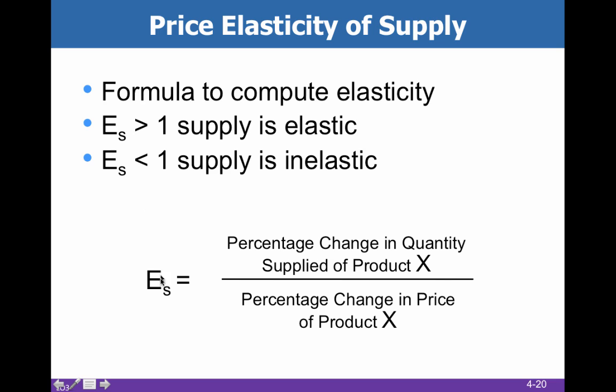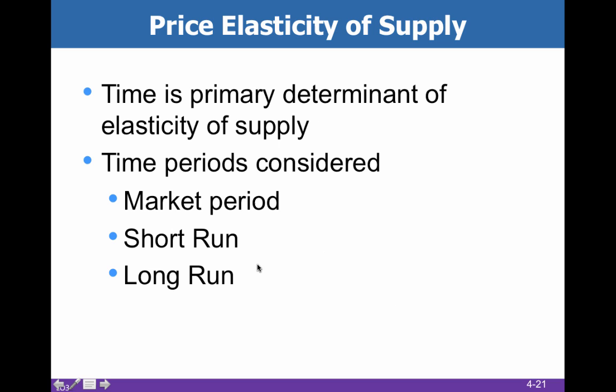Our formula is pretty much exactly the same as what we learned with elasticity of demand — it is stuff over money. The percentage change in price of the product is on the denominator, and percentage change in quantity of the product is in the numerator. Everywhere that we saw a D, we put an S; everywhere that we saw quantity demanded, we put quantity supplied.